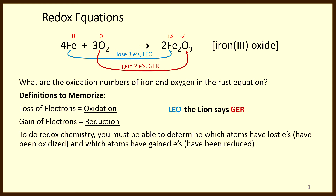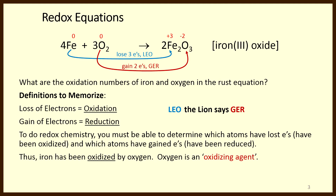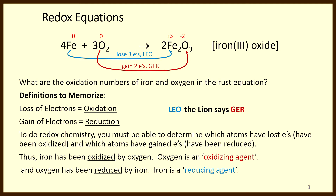In order to do redox chemistry, you must be able to determine which atoms have lost electrons — have been oxidized — and which atoms have gained electrons — have been reduced. Iron has been oxidized by oxygen, so oxygen is an oxidizing agent. And oxygen itself has been reduced by iron, so iron is said to be a reducing agent.